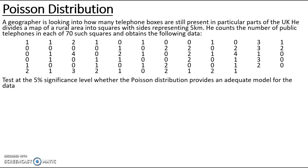In this example we're going to look at a chi-square goodness of fit test for the Poisson distribution with unknown parameters. Here we have an example about a geographer who's looking into how many telephone boxes are still present in a particular part of the UK. He divides a map of a rural area into squares with sides representing 5km. So he's got 70 squares that are 25km². We've got the data presented as raw data, so we need to think about that. It asks us to test at the 5% significance level whether the Poisson distribution provides an adequate model for the data.